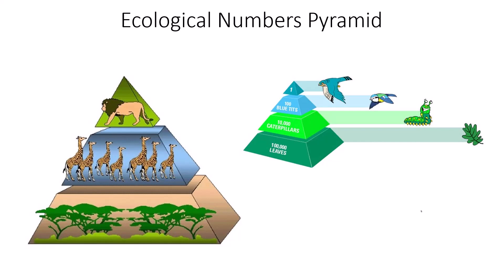The ecological numbers pyramid is still a pyramid, however there is no energy designation for each level — instead we are talking about actual organism numbers. In one example, 100,000 leaves support 10,000 caterpillars; 10,000 caterpillars support 100 blue tits, which is a smaller bird; and 100 blue tits can support one falcon. Going from 100,000 to 10,000 to 100 to 1, it clearly decreases in size at every level.